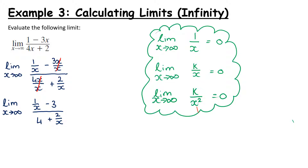We've created two fractions with x in the denominator. We know that 1 over x and 2 over x both go to 0 as x goes to infinity. The 3 and the 4 are unaffected since there's no x there. So we end up with 0 minus 3 all over 4 plus 0, which simply gives us minus 3 over 4.